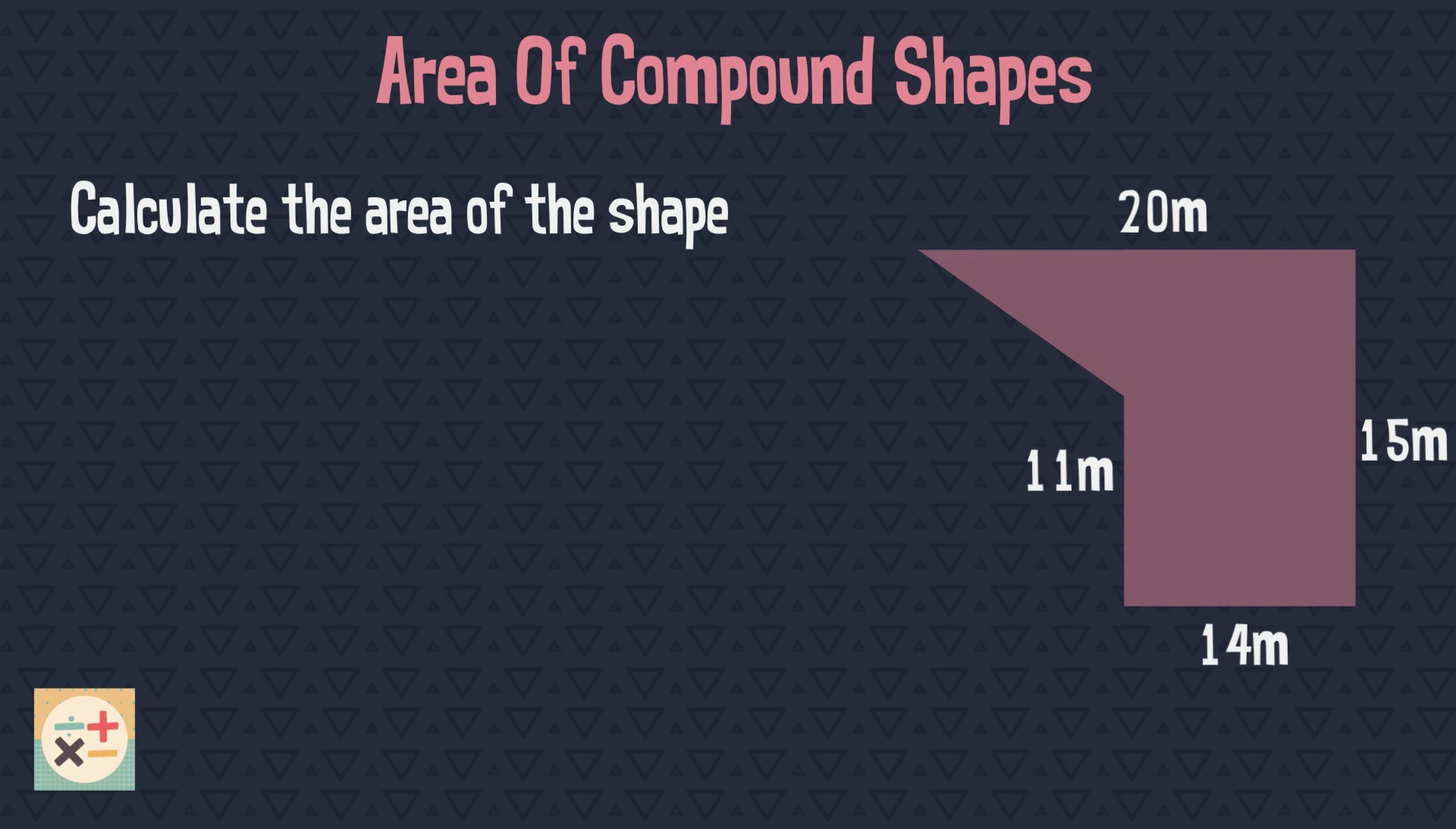Have a look at this next example. We can split this compound shape into a triangle and a rectangle. Let's firstly find the areas of each of these basic shapes. Notice that we need to do some calculations to find the measurements for the triangle.